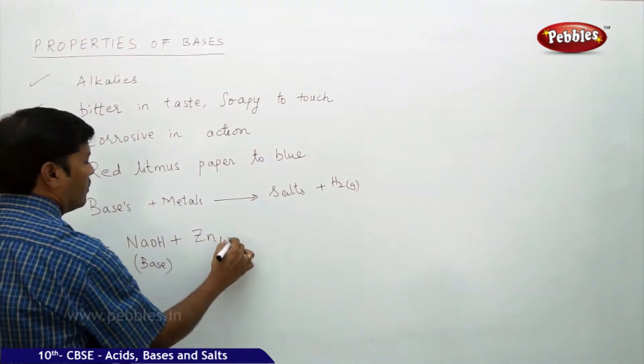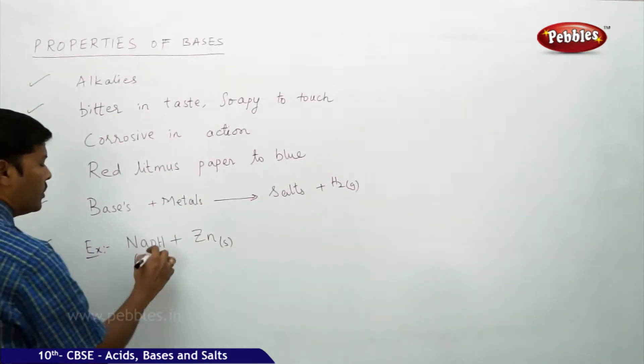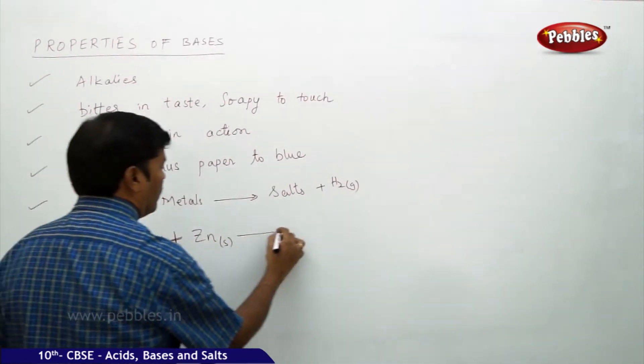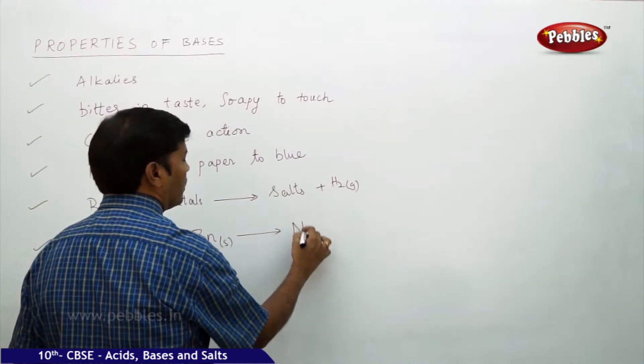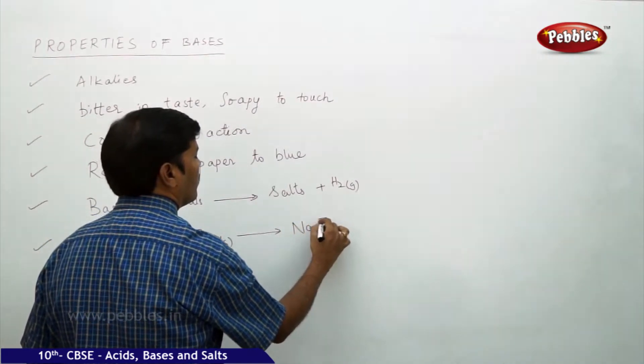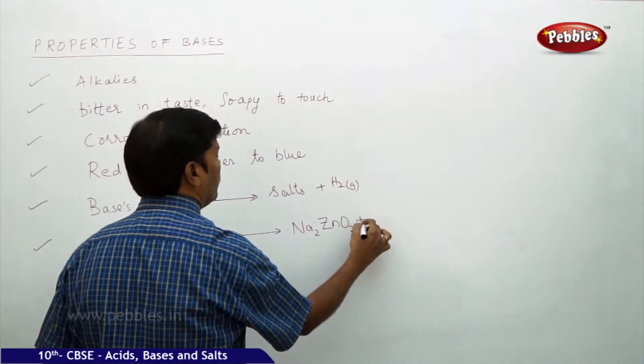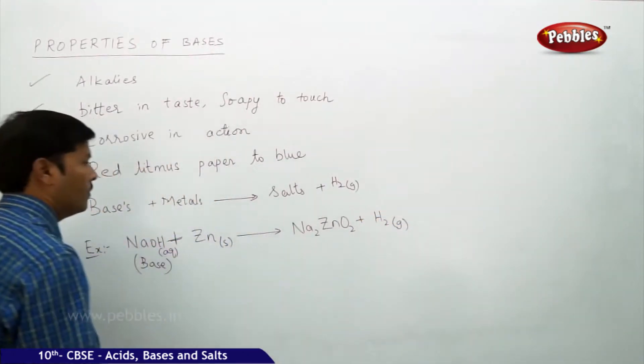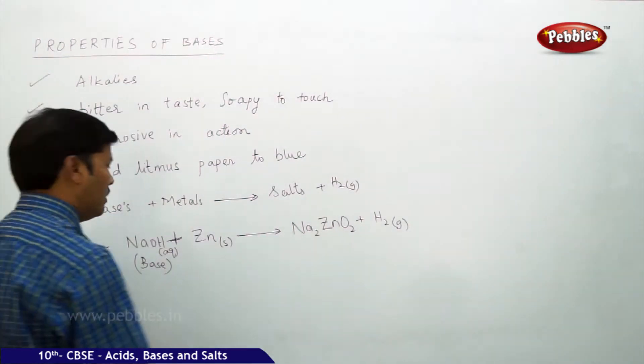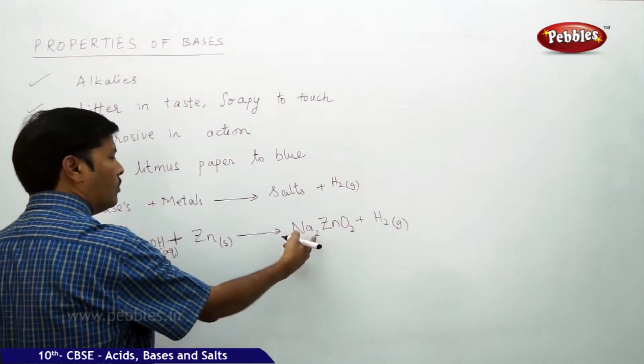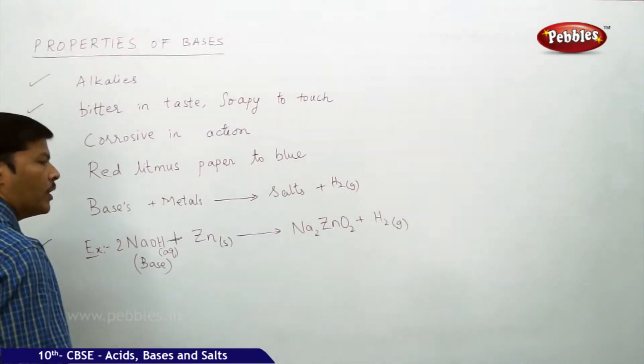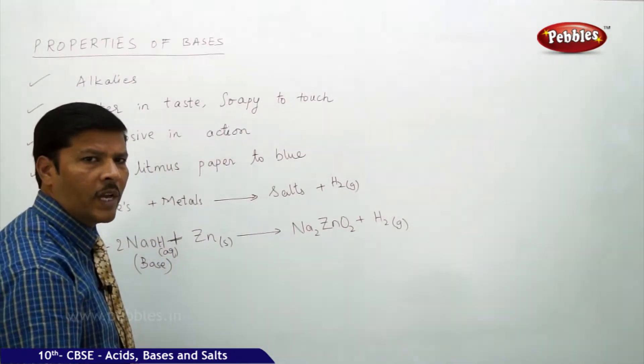You take zinc solid, NaOH aqueous, it gives rise to sodium zincite Na2ZnO2 plus H2 gas. If you balance the equation, there are two sodiums, two hydrogens, and two oxygens. So if you place 2 here, the reaction is balanced.